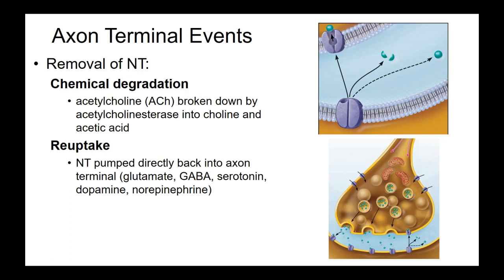One way to remove neurotransmitter is by degrading it. Acetylcholine gets released and binds to the acetylcholine receptor, but we don't want to constantly cause skeletal muscle to contract. So one way acetylcholine can be removed is by chemically breaking it apart using an enzyme called acetylcholinesterase. Once it's broken apart, it's no longer stimulating the skeletal muscle to contract.